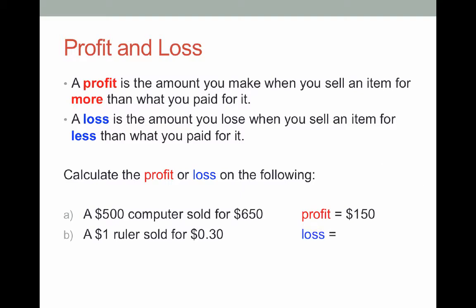The $1 ruler sold for $0.30 will make a loss. We're selling it for less than what we bought it for. In this case the loss is $0.70. This comes from $1 take away $0.30.